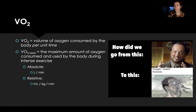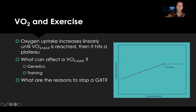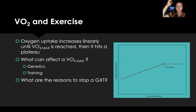VO2 max is the maximum amount of oxygen your body can uptake during intense exercise. It is the point at which oxygen consumption does not increase with increasing intensity. You can see on the graph that intensity continues to increase, but oxygen consumption hits a plateau — your body cannot consume more oxygen beyond that point.